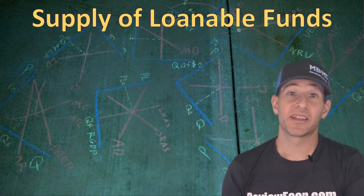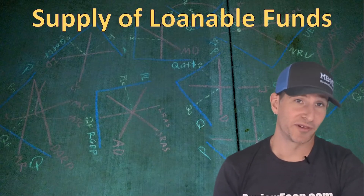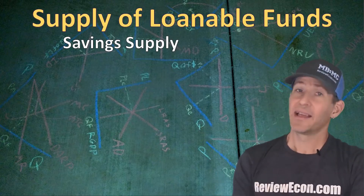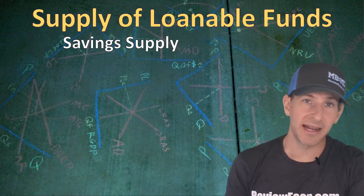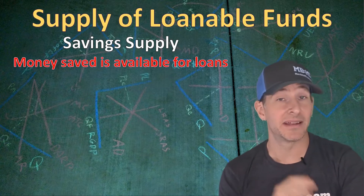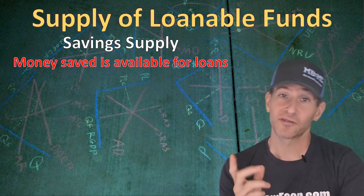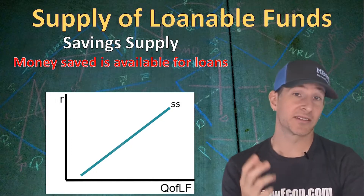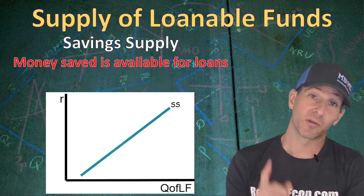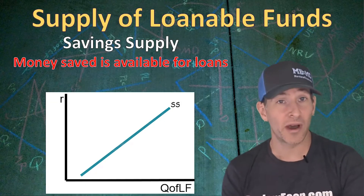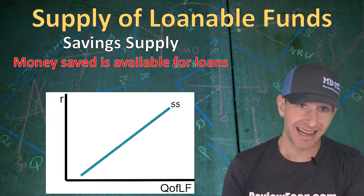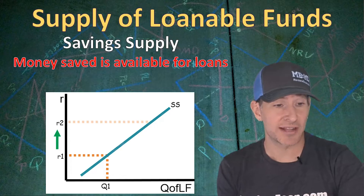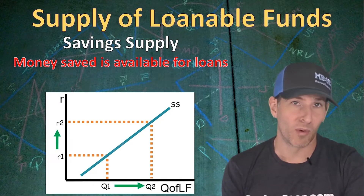Next we're going to talk about the supply curve within the loanable funds market. We call the supply curve the savings supply, because when most people save their money they put it in banks, and that money is then made available for loans. The savings supply curve is upward sloping because there's a direct relationship between the real interest rate and the quantity of loanable funds that people save. When interest rates are low, people save less, and when interest rates are high, people save more.